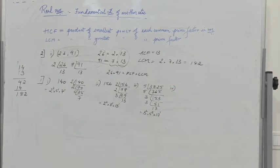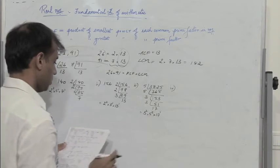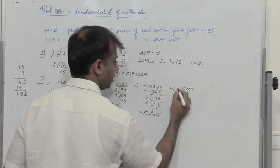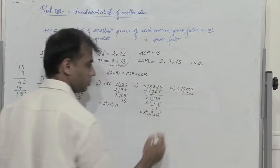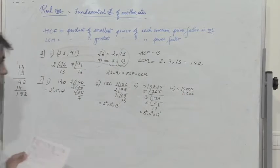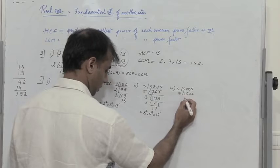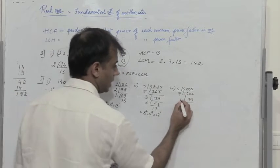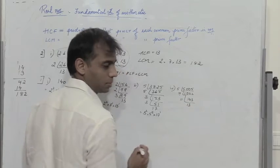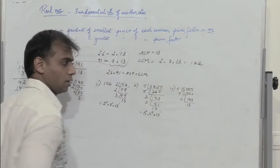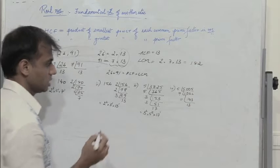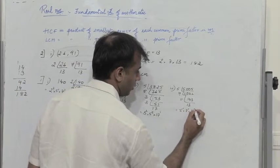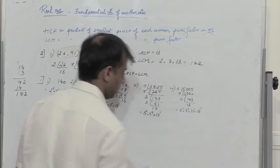The next one: 5005. Dividing by 5 gives 1001, by 7 gives 143, by 11 gives 13. So 5005 = 5¹ × 7¹ × 11¹ × 13¹.